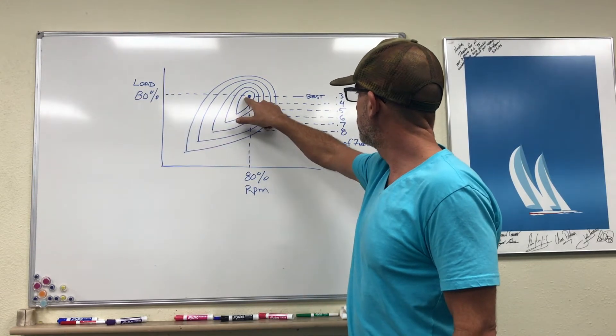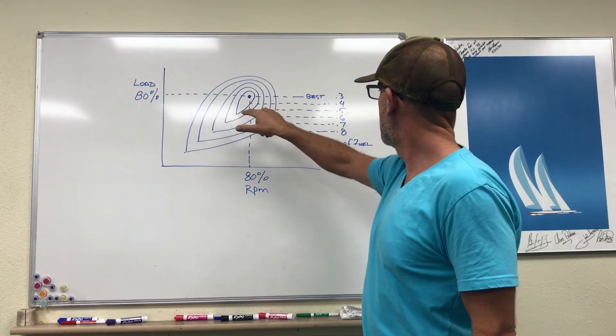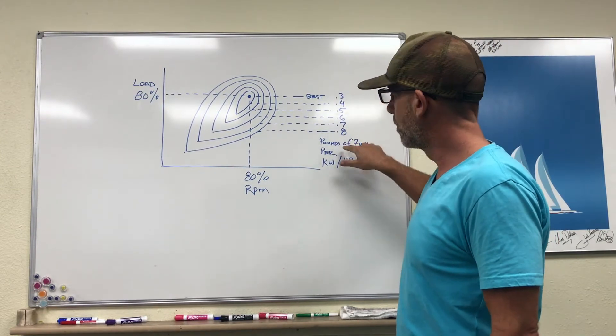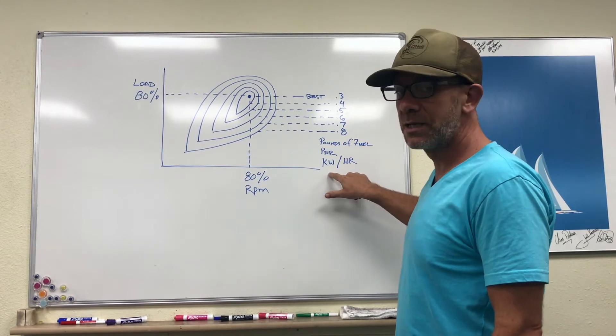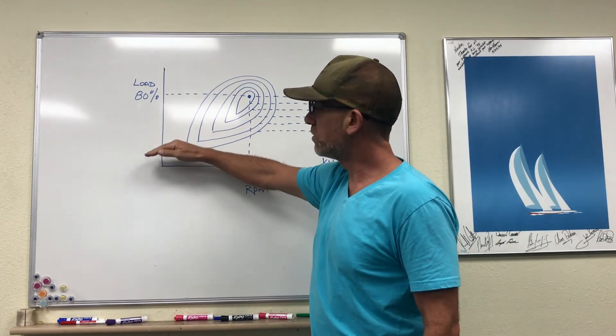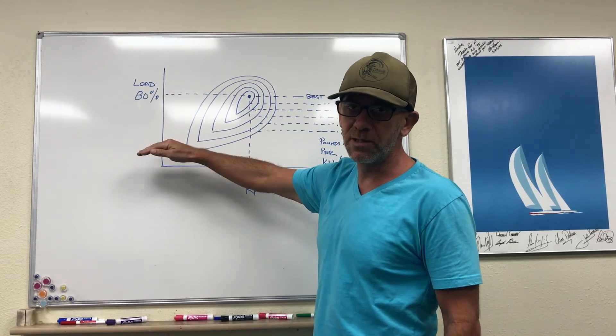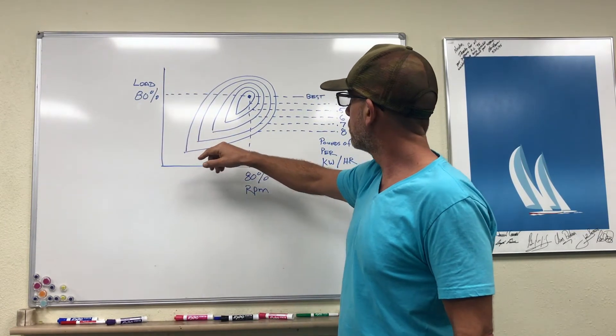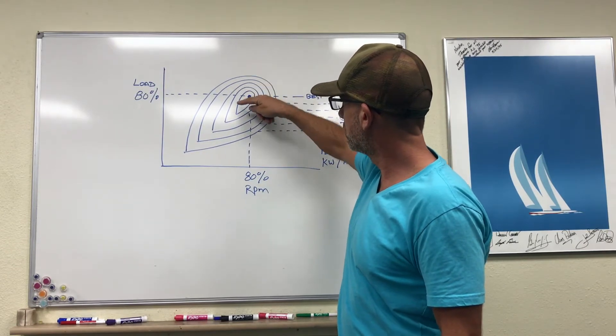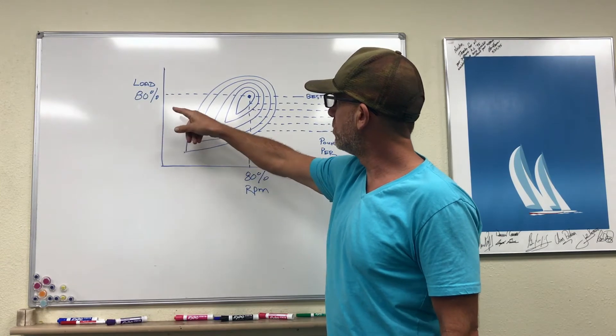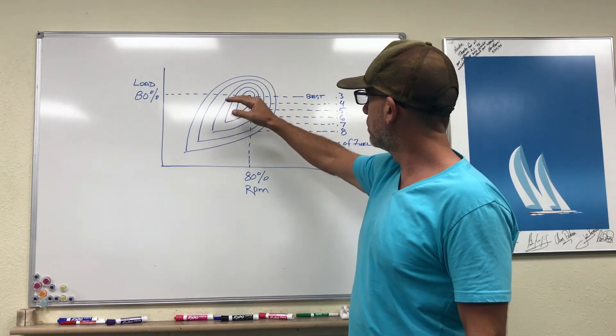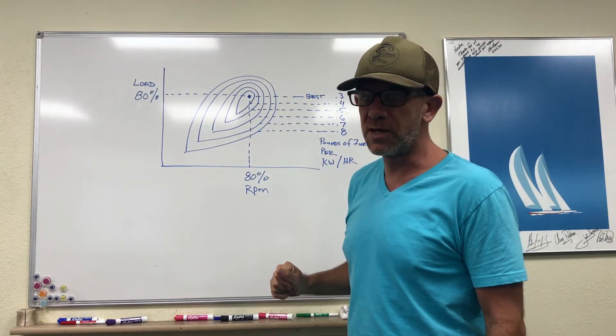...that is going to achieve your very best efficiency, and in this case this is 0.3 pounds of fuel per kilowatt hour. If the load changes, so the amount of power that you're drawing from the generator changes, you're going to move into these different concentric circles here. And depending how far away you move from that theoretical 80% load determines how your efficiency ends up.